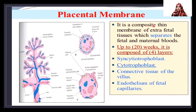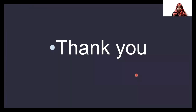The placental membrane is composed of a thin membrane of extra-fetal tissues which separates the fetal and maternal circulations. It consists of syncytiotrophoblasts, cytotrophoblasts, connective tissue, and endothelium. These are the things most commonly asked regarding this topic. Thanks for watching, and we will see the next class with umbilical cord and its abnormalities.